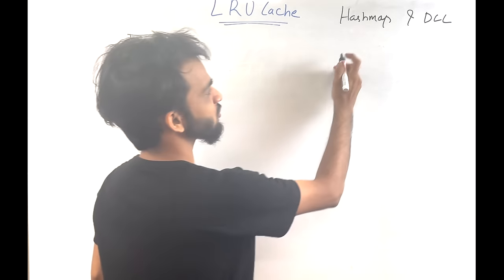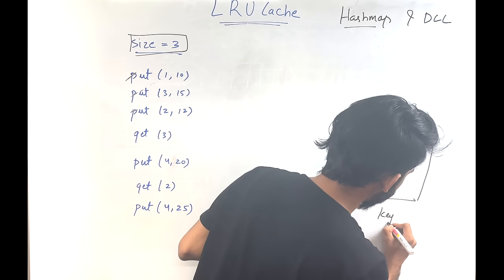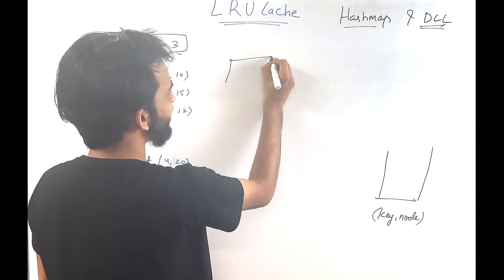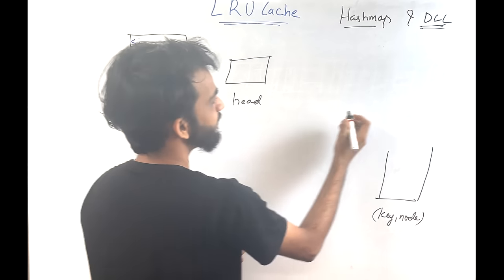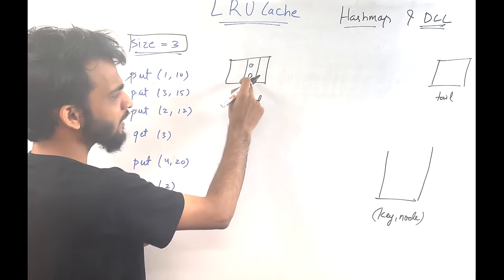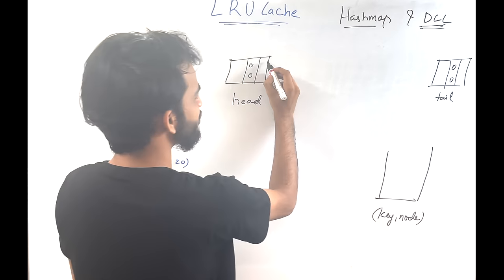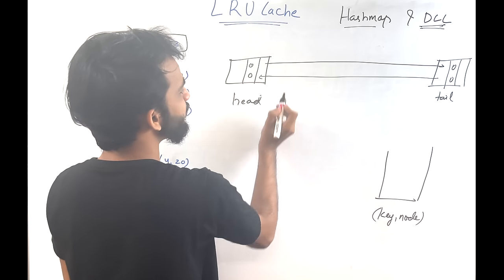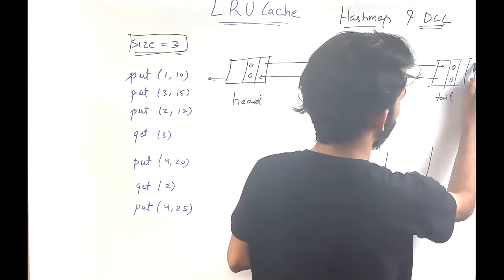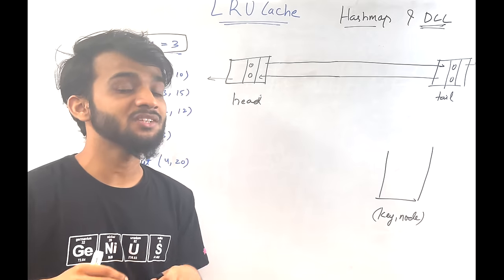To implement the get and put functions of an LRU cache, we need a hash map and a doubly linked list. The hash map stores key-to-node-address mappings. The doubly linked list has an initial configuration with two dummy nodes: a head and a tail, both with key 0 and value 0. Head's next points to tail, and tail's previous points to head.